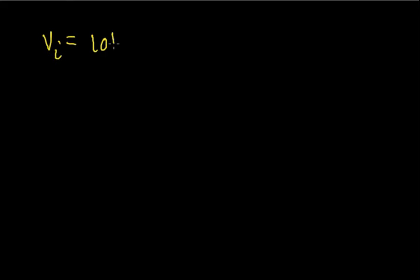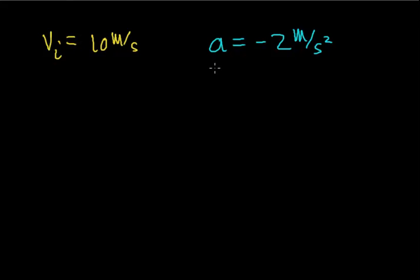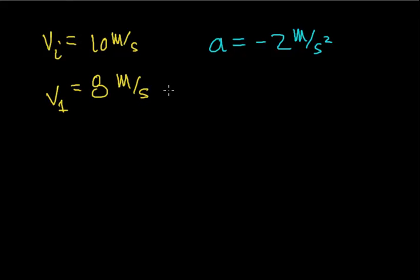Let's say I have an initial velocity of 10 meters per second, and the object is slowing down. So the acceleration equals negative 2 meters per second squared — meaning the velocity will decrease by 2 meters per second every single second. One of the key ideas is that when the velocity and the acceleration signs are opposite, the object is going to be slowing down. After 1 second has elapsed, the velocity goes from 10 meters per second to 8 meters per second — decreasing by 2 meters per second.